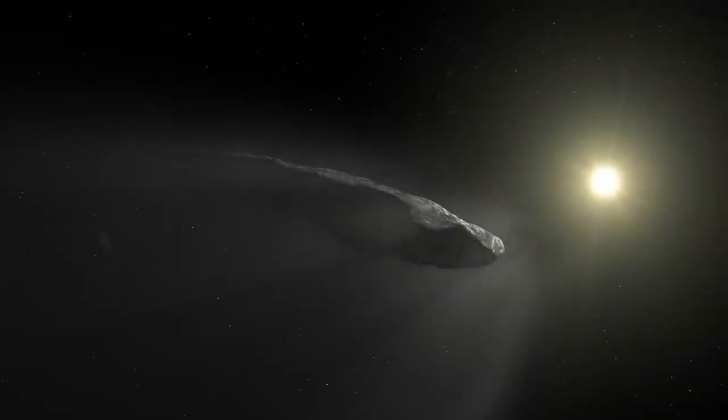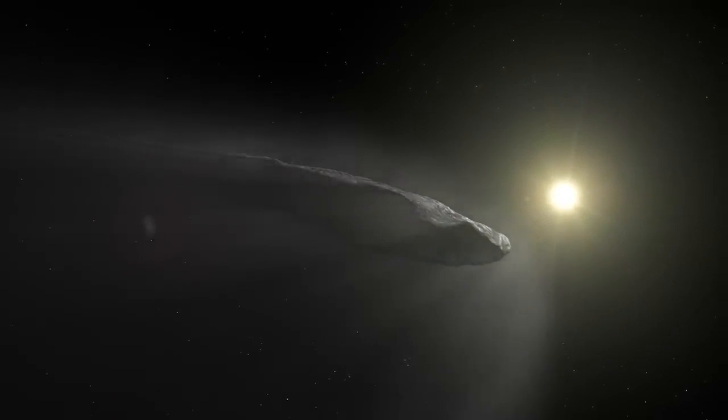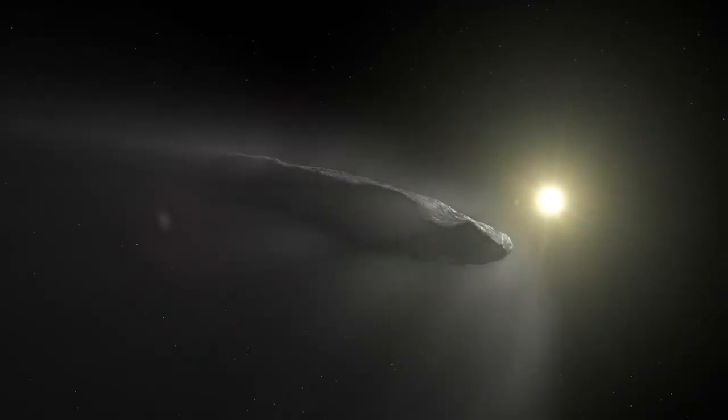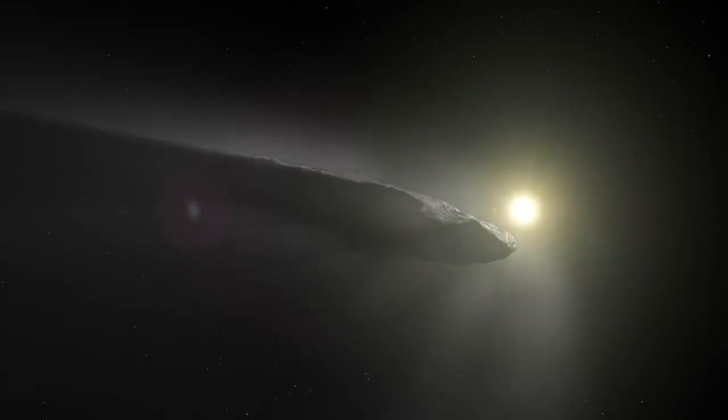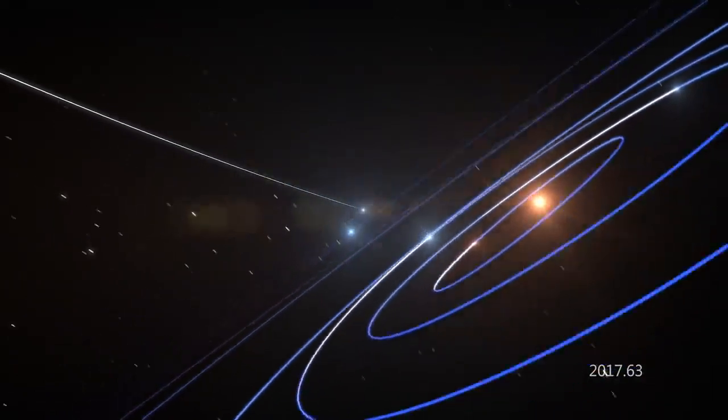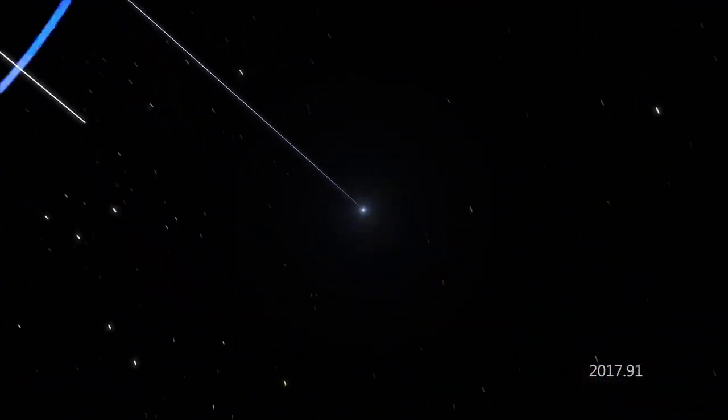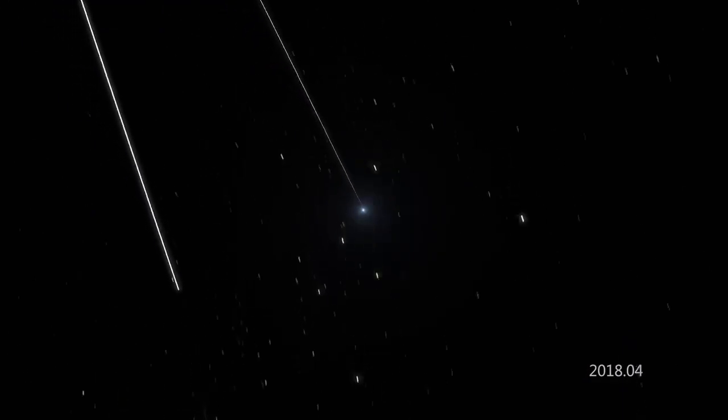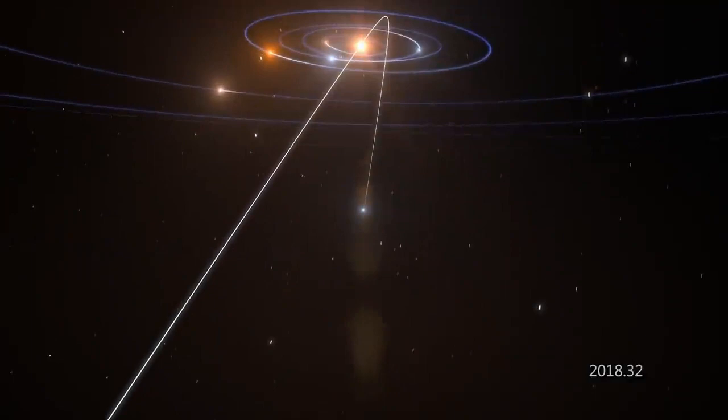The telescope has also captured observations of some special interstellar visitors. In 2018, Hubble studied Oumuamua, the first interstellar object discovered in the solar system. In cooperation with other ground-based telescopes, it was determined that the object was likely a comet and was moving away from the Sun faster than previously expected.